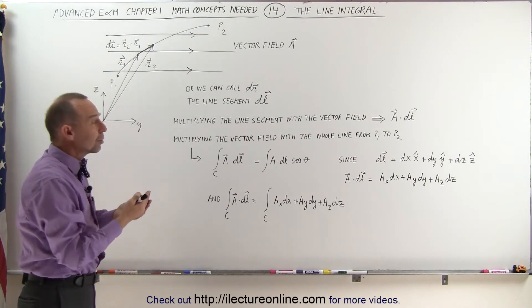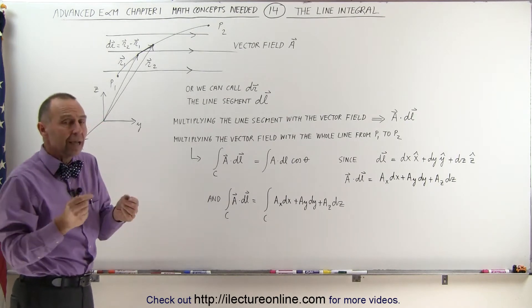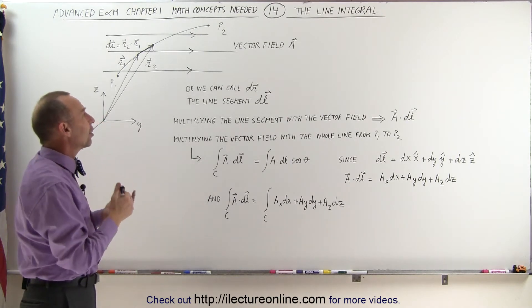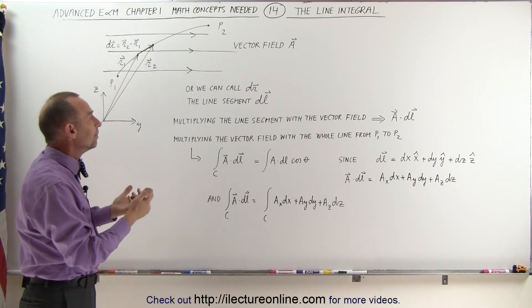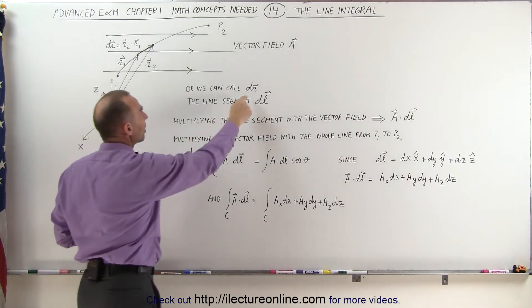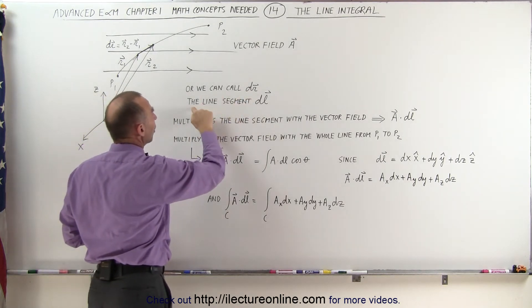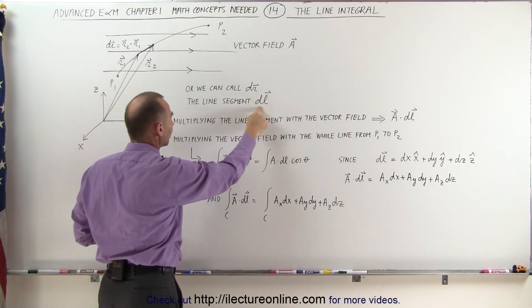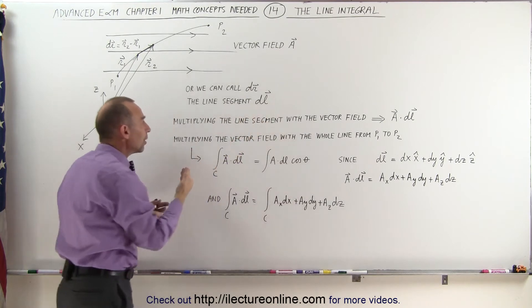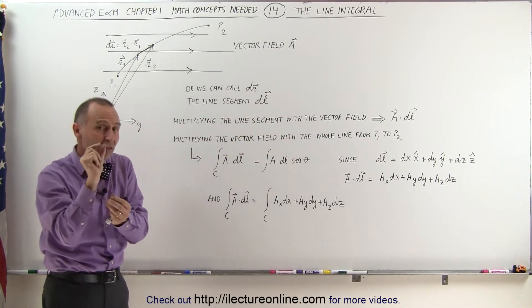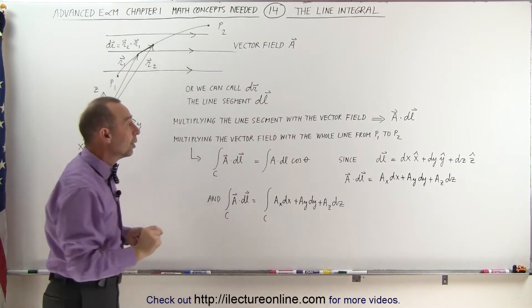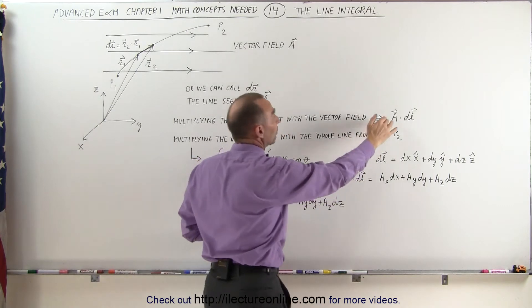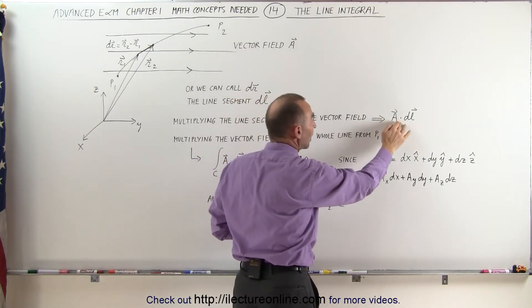With a line integral, a small segment on the line is often called dl. So instead of calling it dr, we simply call that line segment dl. And if we want to multiply that small dl with the vector field, that is simply the vector field dotted with dl.